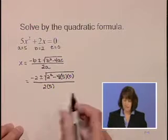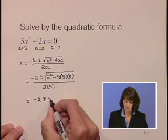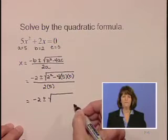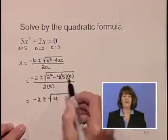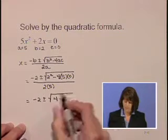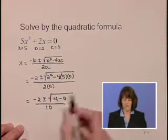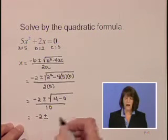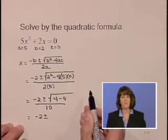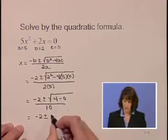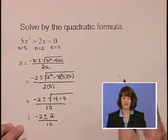Now we'll clean this up. Out in front, we still have that negative 2 under the radical. 2 squared is 4 minus 0. 4 minus 0 is just 4. The square root of that 4 is 2. All over 10.